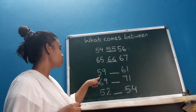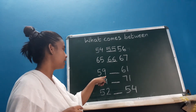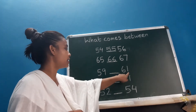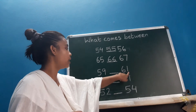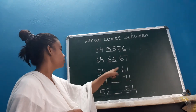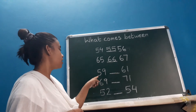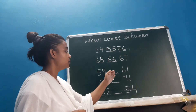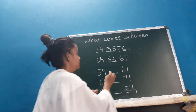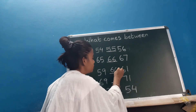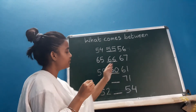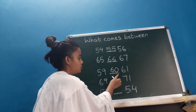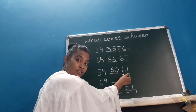Now next. Which number is this? 59. And there is a blank space, and after that 61. So which number is missing here? After 59, when you do counting numbers, after 59, the number will be 60. And then after that 61. So: 59, 60, 61.